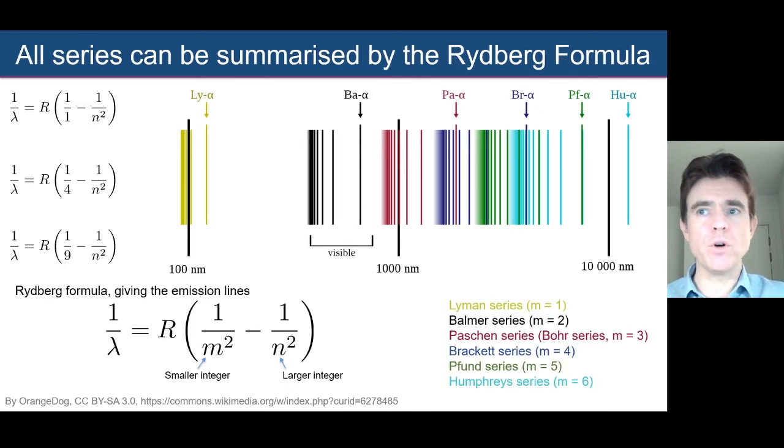And in fact, there are a whole number of different spectra, different series, that can be found for hydrogen. I'm listing some of them here. Lyman, Balmer, Paschen, Brackett, and others. And you can see that we can come up with a very similar formula for all of them.